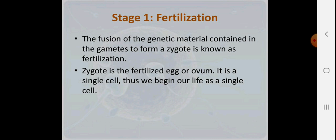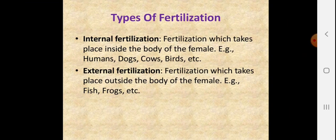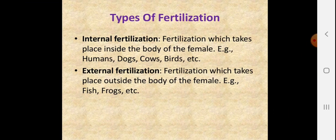A zygote is the fertilized egg or ovum — a single cell. We all began life as a single cell called a zygote. Types of fertilization: internal fertilization takes place inside the body of the female, for example in humans, dogs, cows, and birds. External fertilization takes place outside the female body, for example in fish, frogs, and generally amphibians.